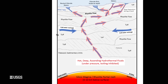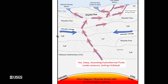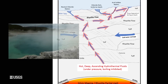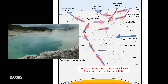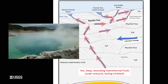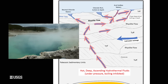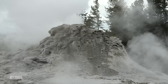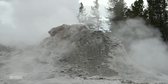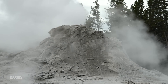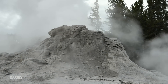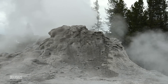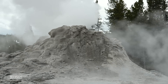That warm water then buoyantly rises up to the surface, even through some of the colder groundwater that may be between that and the surface. And when it reaches the surface, it deposits a lot of that silica that it has dissolved in the rock below. That gives you these really beautiful terrace features and also some of the cones that make up geysers like Old Faithful, Castle, and Giant. So neutral chloride features are some of the most iconic features in Yellowstone National Park.